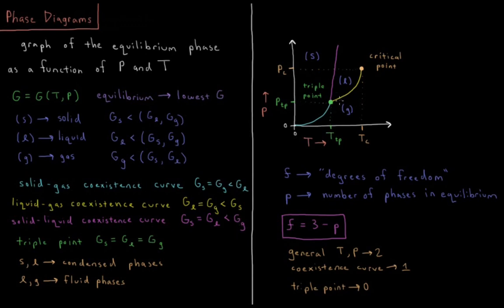Along the liquid-gas coexistence curve you would have vaporization or condensation. Along the solid-liquid coexistence curve you could have melting or freezing. And along the solid-gas coexistence curve you could have sublimation or deposition.